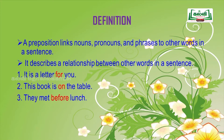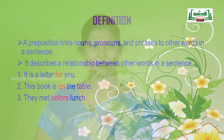Look at these examples: 'It is a letter for you.' 'This book is on the table.' 'They met before lunch.' In these three sentences, the words for, on, and before are prepositions. You can identify the preposition because it links the nouns and other words in a sentence.